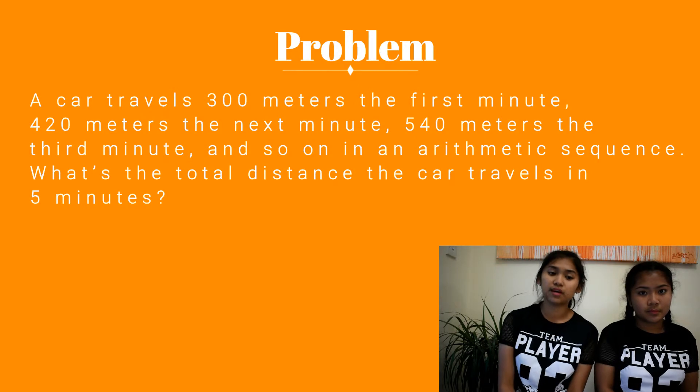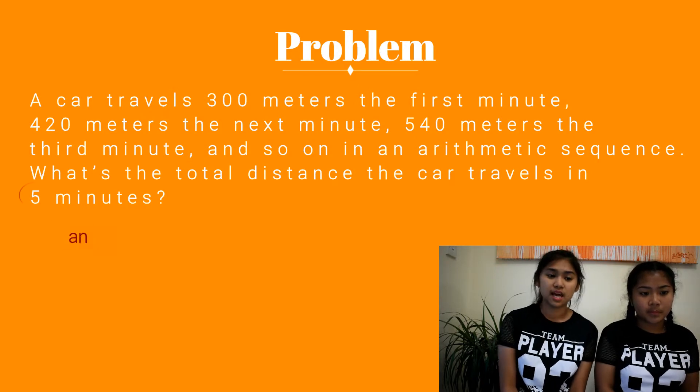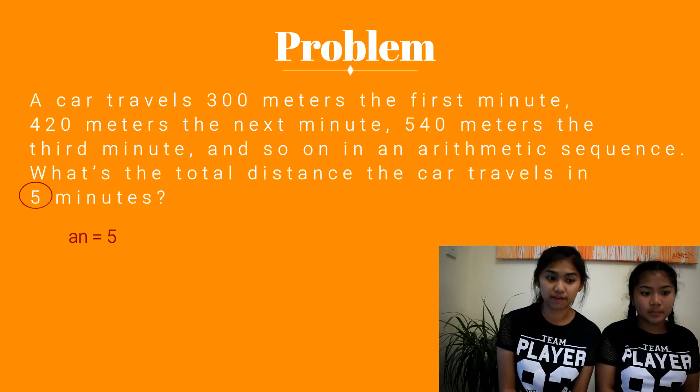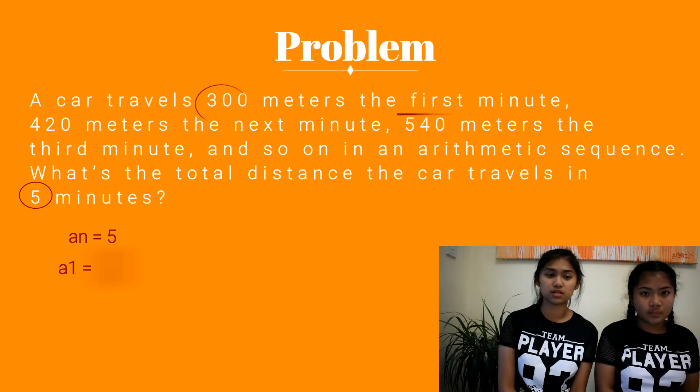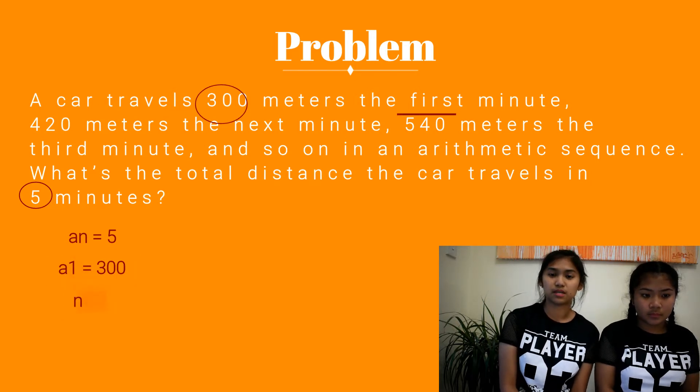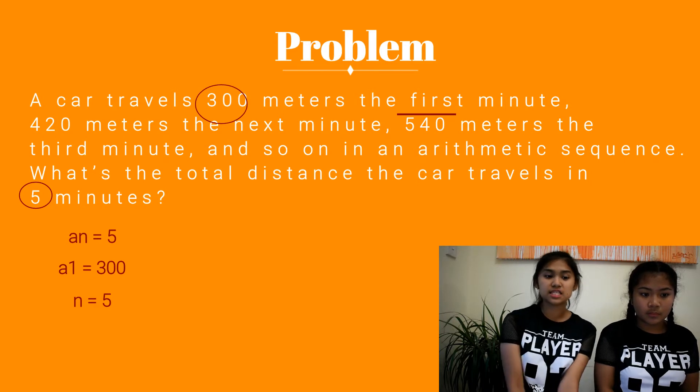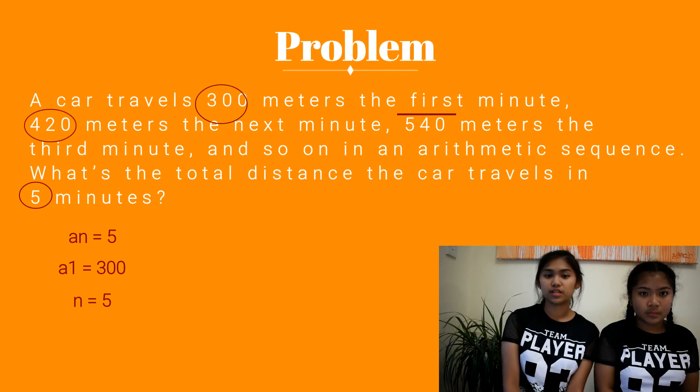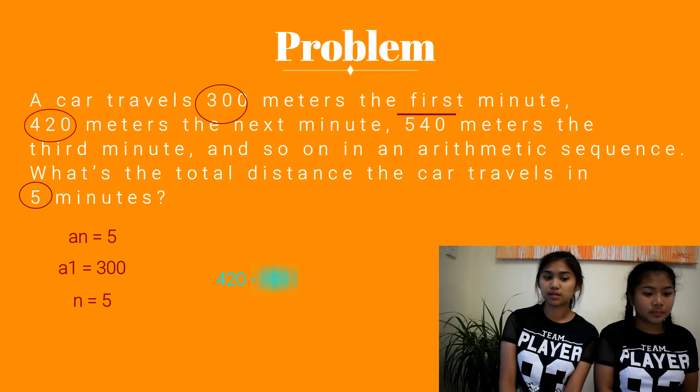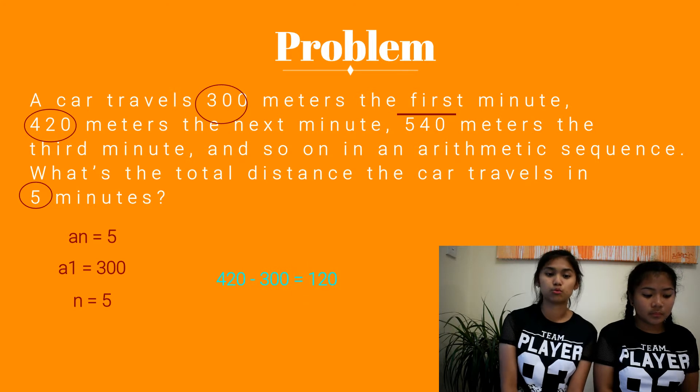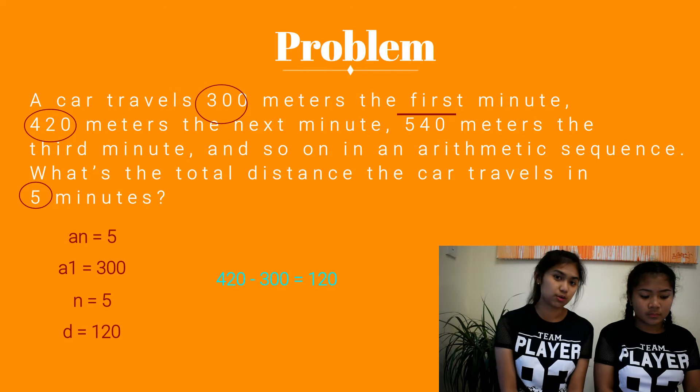First, we're gonna find the givens. Since d is not given, we're going to solve for it. We'll subtract the second term and the first term. For instance, 420 minus 300 is equals to 120. Now, our common difference is equals to 120.